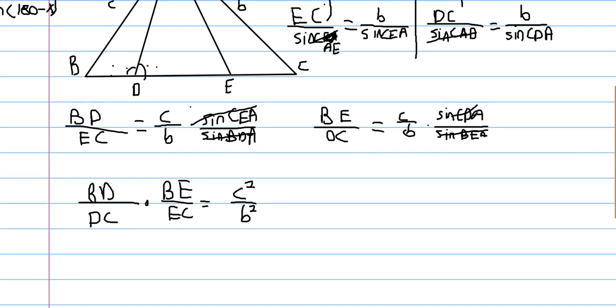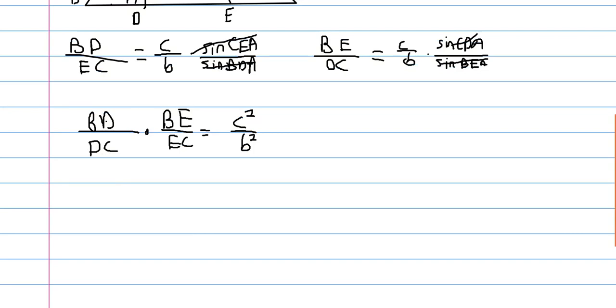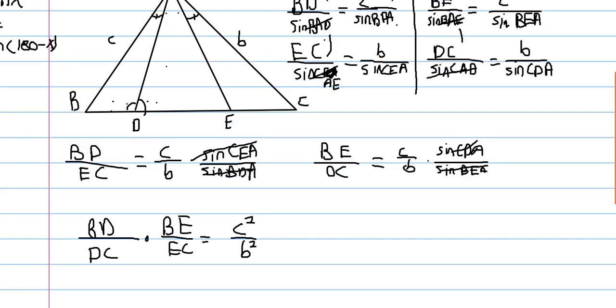Like I said, if one of these were a median, like say AD was a median, then BD over DC is just one.